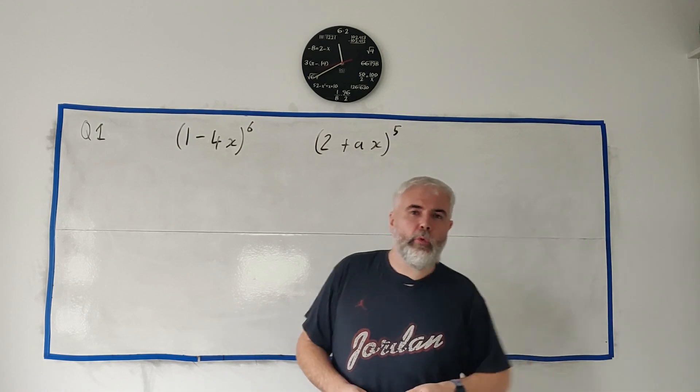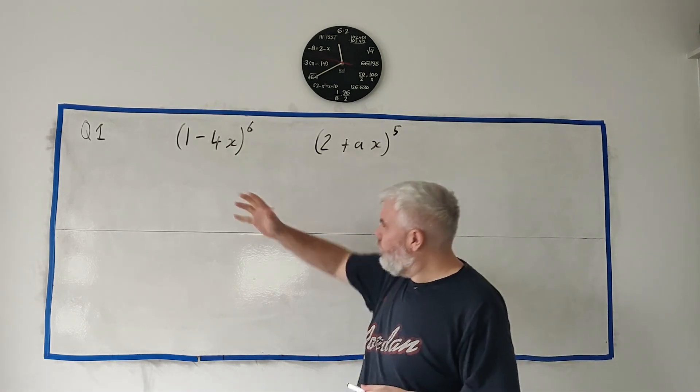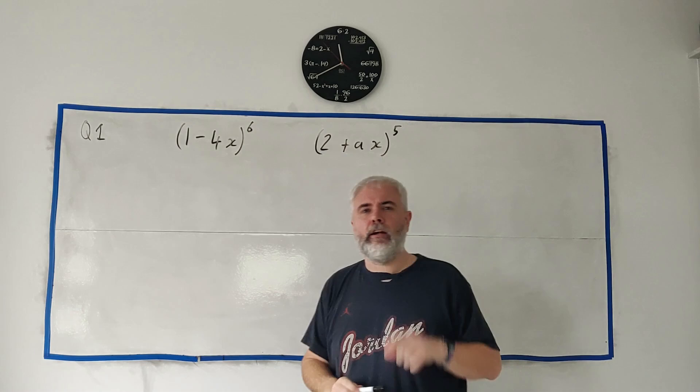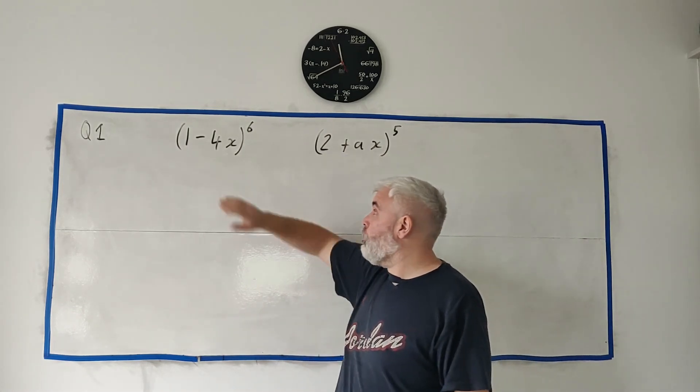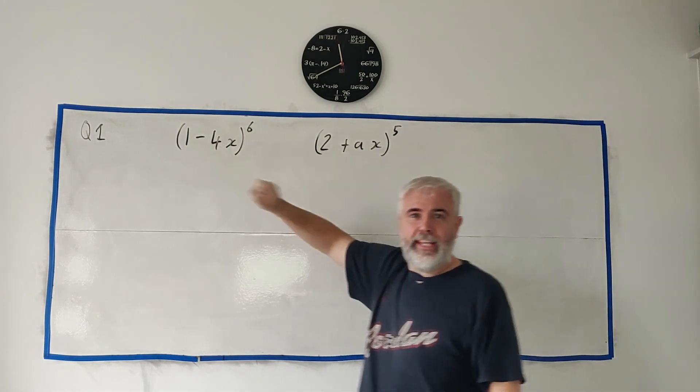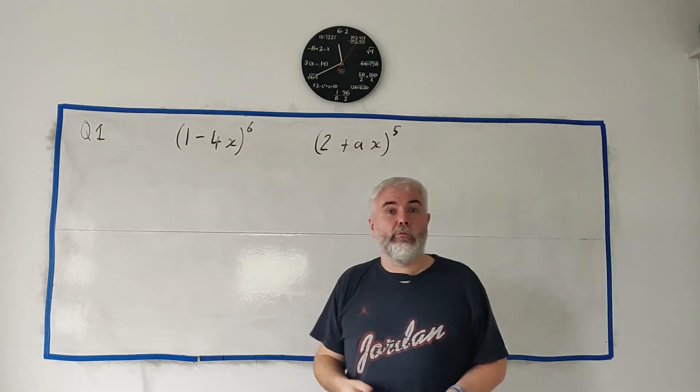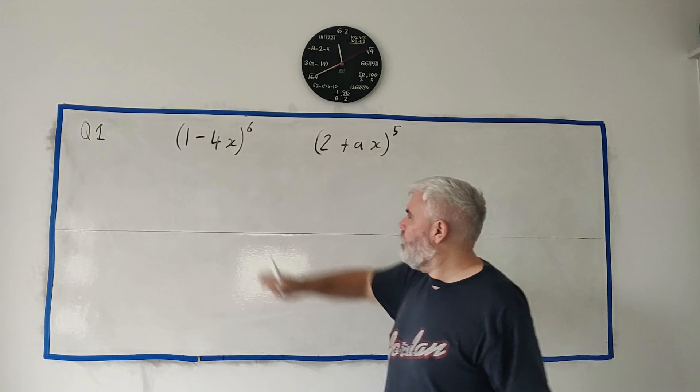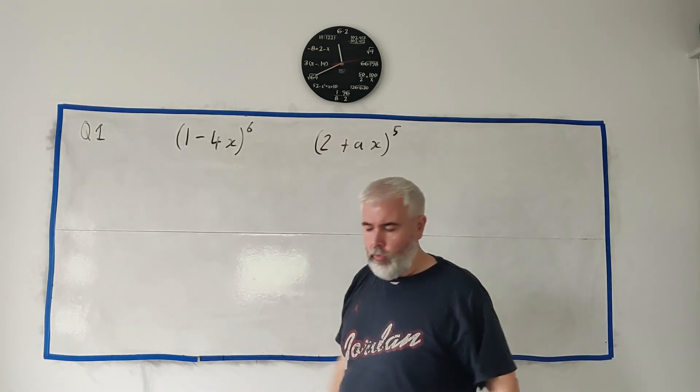In question 1 we have a very common question that we have to do a binomial expansion. They give us two expressions here (1-4x)^6 and this one here and they tell us the coefficient of the x squared part of this one is 12 times the coefficient of the x squared part of this one. So really obviously we have to find the x squared part of each of these. I'll do a lot of the parts of this just to show you what we're doing.